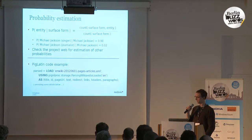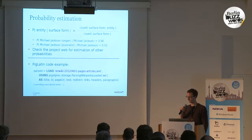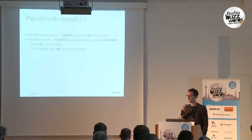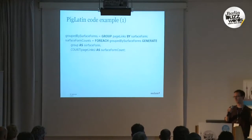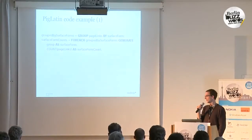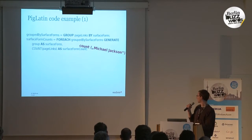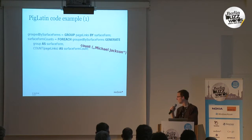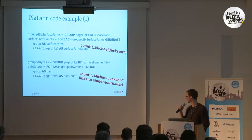Our script starts by firing up the Pig loader, giving it a Wikipedia dump, and it parses out the title, ID, page URL, and so on. The interesting part that looks neat in Pig: if we have a dataset containing page links — tuples going from surface form to entity — we can group those by surface forms and count how many times a surface form occurred in Wikipedia. For example, we can count how often "Michael Jackson" was used as a link. We can also count the mapping from a surface form to an entity — whether "Michael Jackson" linked to the singer or to the journalist.